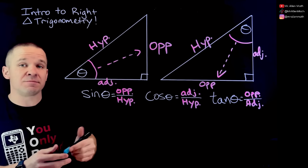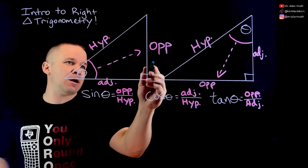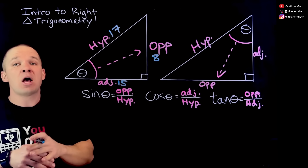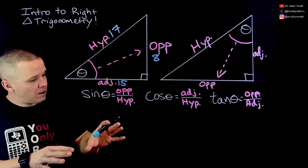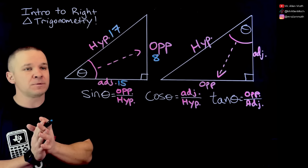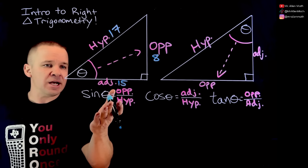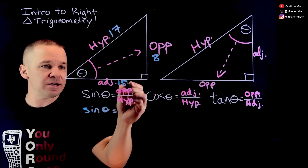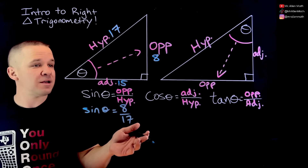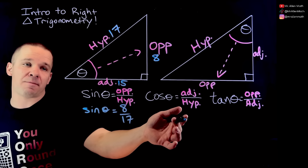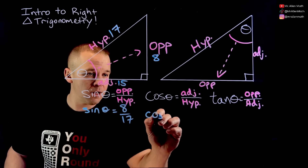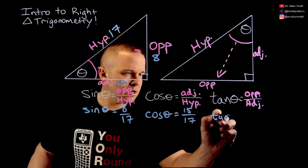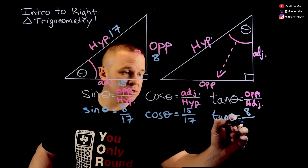Let's add some side lengths to this triangle. I'm going to say this side is 8, this one is 15, and this one is 17 — an 8, 15, 17 Pythagorean triple. Now Pythag is still in play here, we're just learning new math. For sine of theta, it's equal to the opposite over the hypotenuse, so sine of theta equals 8 over 17. Cosine is adjacent over hypotenuse, so cosine of theta equals 15 over 17. And tangent is opposite over adjacent, so tangent of theta equals 8 over 15.